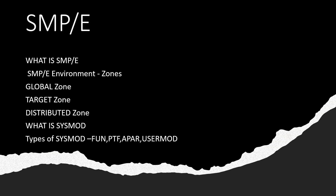Hello team, good morning all. Welcome to our mainframe class. In this video we are going to cover a very important concept of z/OS, that is SMP. We'll discuss what is SMP, how SMP works, and what is happening in SMP. We'll also understand the three zones: global zone, target zone, and distribution zone, as well as the concept of SysMode and its four types — PTF, function, APAR, and user mode. Please like, share, and subscribe to this channel. Let's start with today's topic.